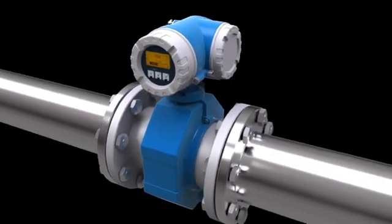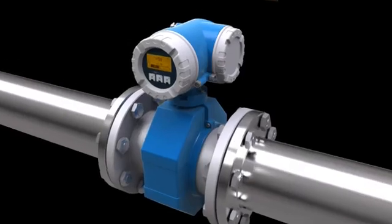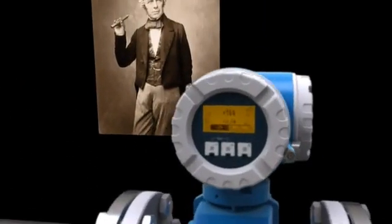The basic physics of this principle can be traced back to the English physicist Michael Faraday, who in 1831 discovered that electrical current can be generated with a magnetic field.